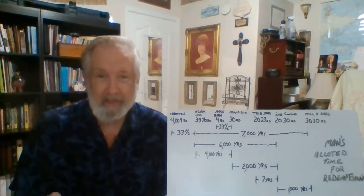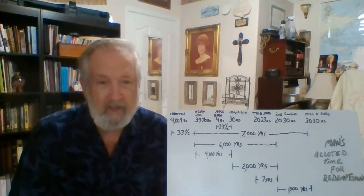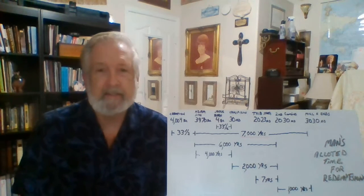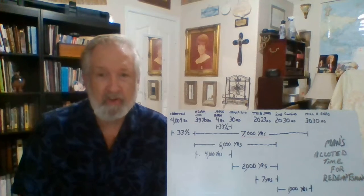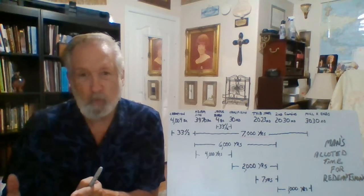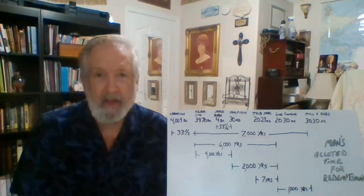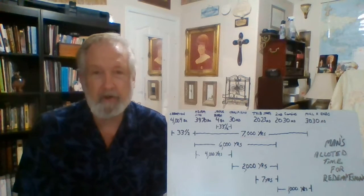And that takes us from 3970 back to 4004. Now if we go from 3970 and we go 4,000 years upwards, we get to the death of Christ, 30 AD. That's 4,000 years of our 7,000 year period.